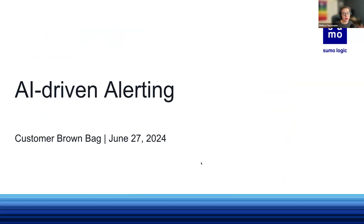Our goal with anomaly detection and AI-driven alerting is to reduce alert noise by 60 to 90%. We want to minimize false positives and prevent false negatives. Once an anomaly is detected, our alert response feature provides a summary and links to automated playbooks for diagnosis and remediation, which helps reduce your incident resolution time.